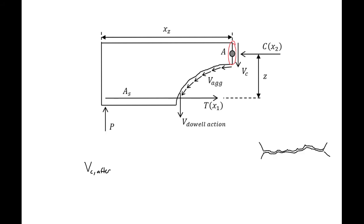The next component that we have is what we call aggregate interlock. You can think of the cracking plane, it will not be smooth. So we'll come over here and look at this example. You can see that the cracking plane is not smooth.